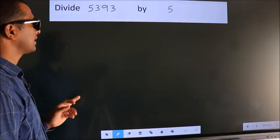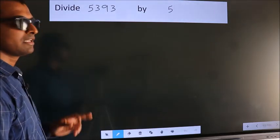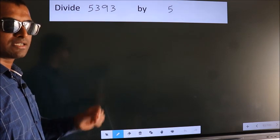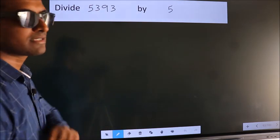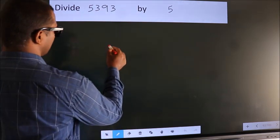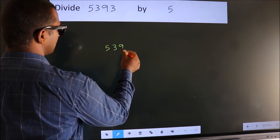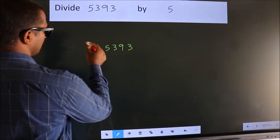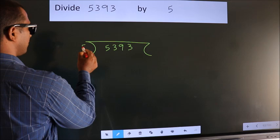Divide 5393 by 5. To do this division, we should frame it in this way. 5393 here, 5 here.